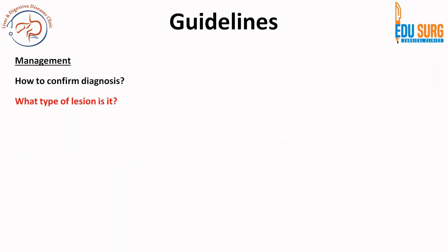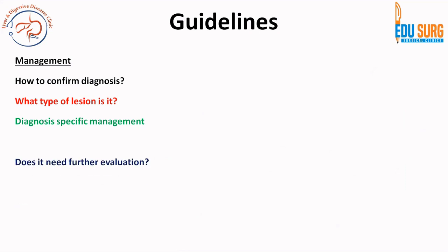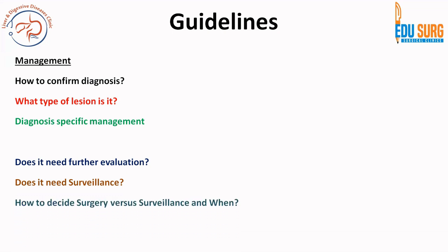When managing patients based on guidelines, we need to confirm the diagnosis and understand the type of lesion. We assess whether further evaluation is required — for example, does an ultrasound finding need a CT, MRI, or endoscopic ultrasound? Once evaluation is complete, we determine if the patient needs surveillance, surgery, or both, when and how to do it, and then plan post-resection surveillance. These are the questions guidelines help you answer.